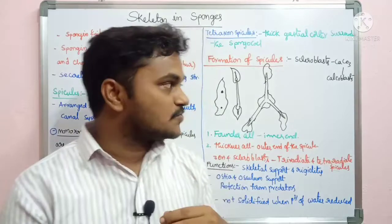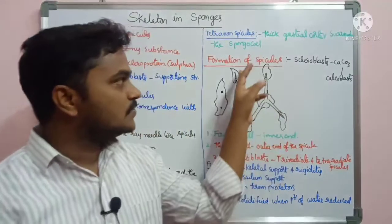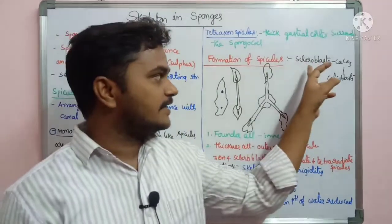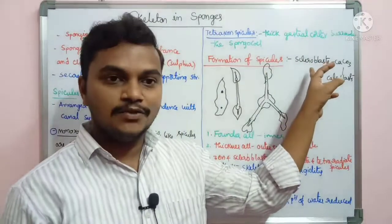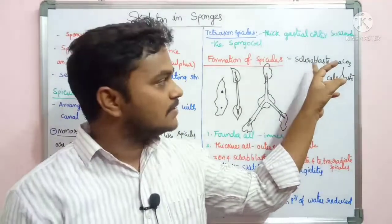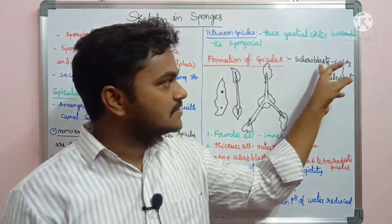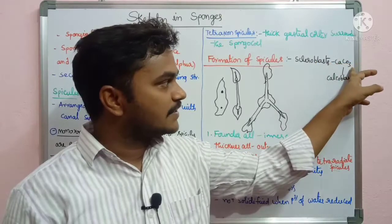Spicules are secreted from scleroblasts. Scleroblasts are calcium carbonate secreting cells, also called calcoblasts.